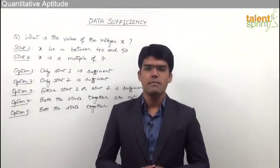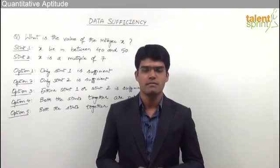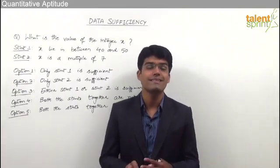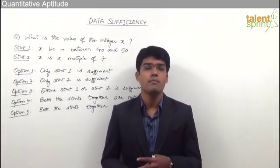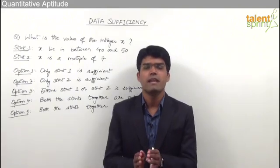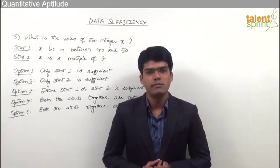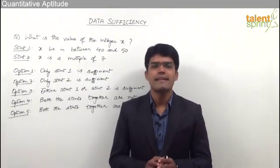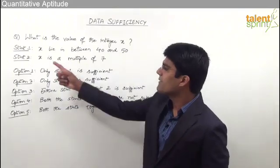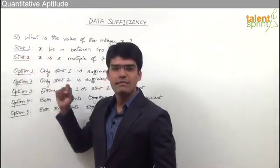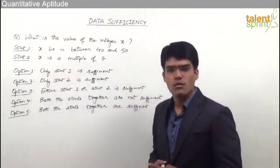A typical data sufficiency question will have a question followed by two statements, but in some cases a question with three statements is also given, and here we have to check which of these three statements or a combination of which statements will help us find out the exact answer. Let us take a simple example to understand how a typical data sufficiency question looks like. As you can see here we have a question followed by two statements — statement one and statement two — and then there are five options.